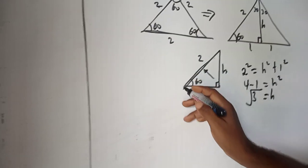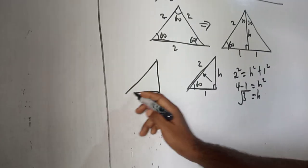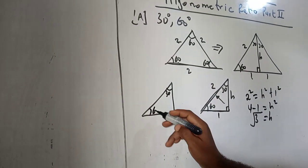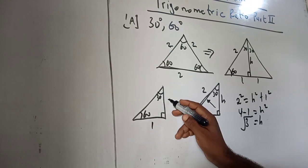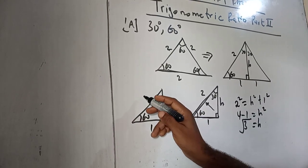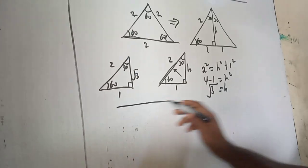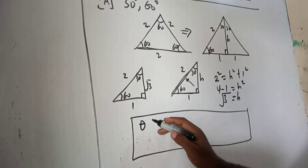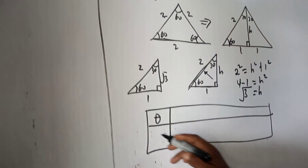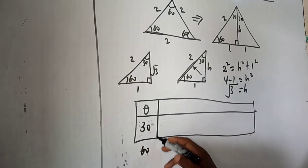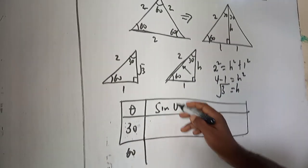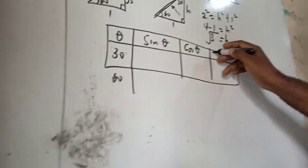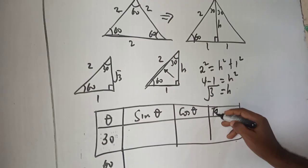So I can rewrite this triangle in this format. The angle here is 30 degree. So I have 30, 60, angle 90, with sides 1, root 3, and 2. So I can draw a table for the trigonometry ratio of angle 30 and then 60, with theta for 30 and for 60, and then sine theta, cos theta, and tan theta.